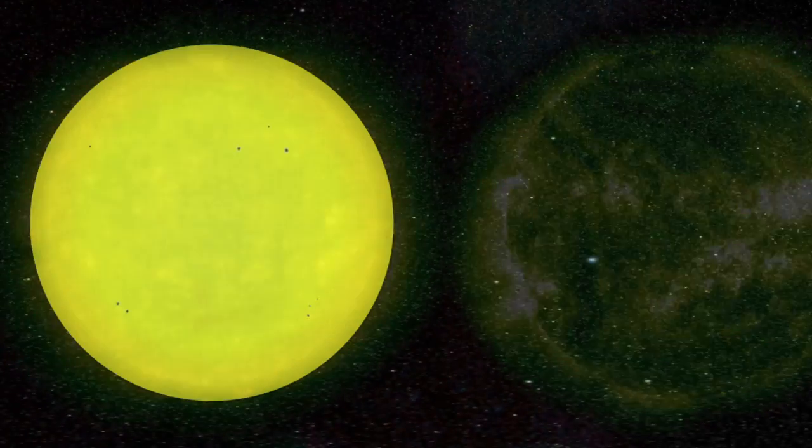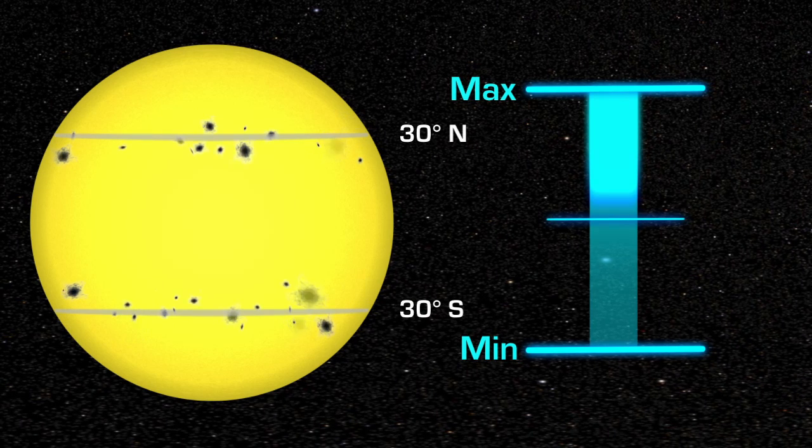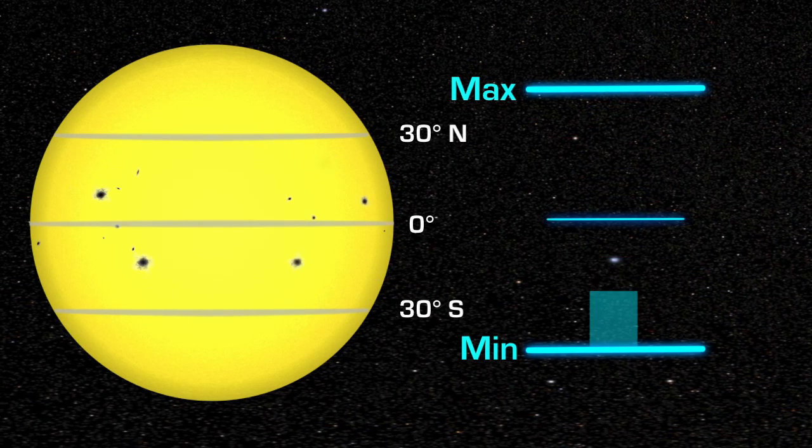During this cycle, the location of the sunspots also changes. They are at middle latitudes during solar maximum and move closer to the equator as the Sun approaches solar minimum.